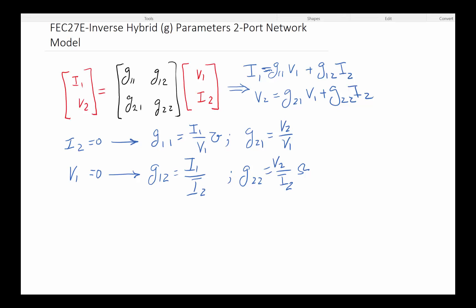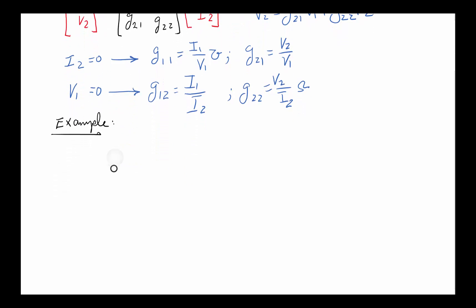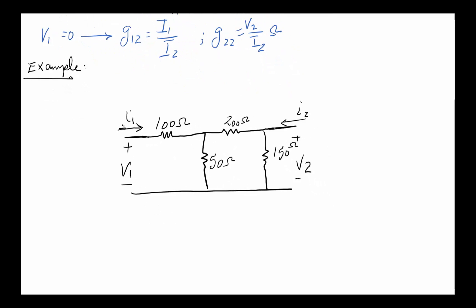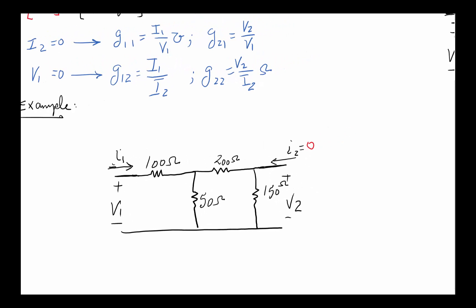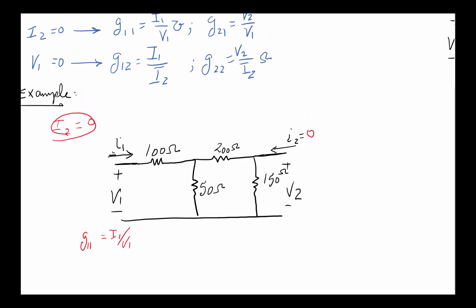For an example to get a better sense of what's going on, we can rework the same circuit we've been using in discussing these parameters. The first option is to set I₂ = 0. It's really important for each case to draw the circuit and note the changes. With I₂ = 0, G₁₁ = I₁/V₁, so we need to find that ratio from the circuit.